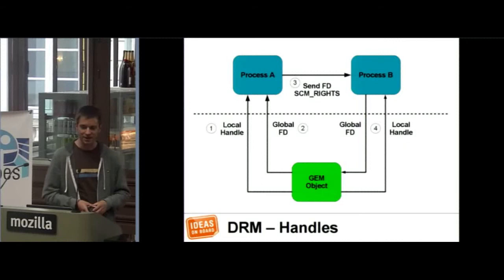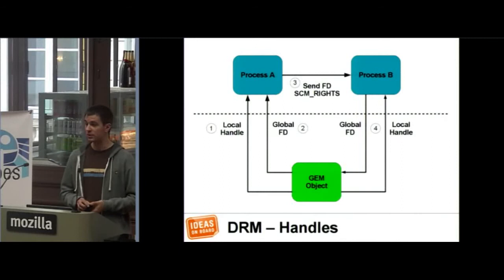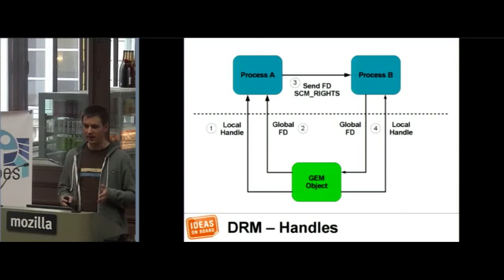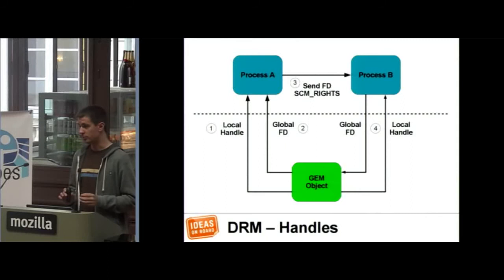One really key part of the DRM API is that it's able to share buffers between different processes and even between different devices. That's extremely important when you want to avoid copying data from one memory buffer to another. If you have a buffer to which you've rendered an image using your GPU, you don't want to copy that to a frame buffer and then scan it out to the screen — copying a 1080p image at 60 frames per second would be extremely expensive. Zero copy is really a target we want to achieve in graphics, and sharing of buffers is needed for that.